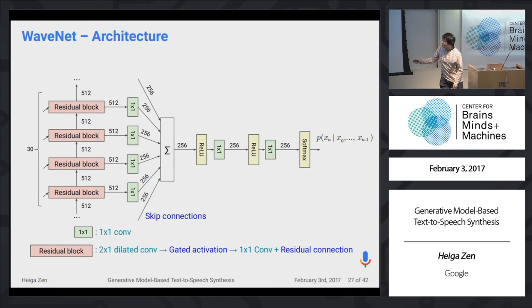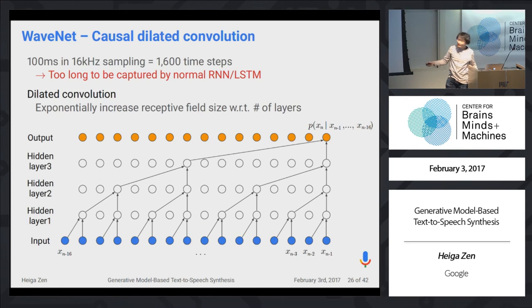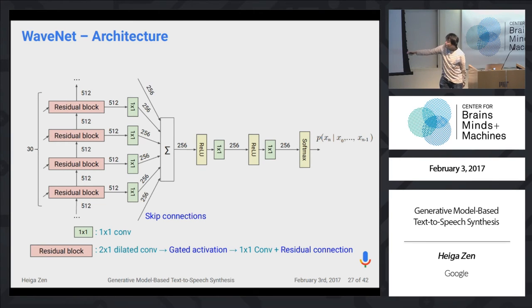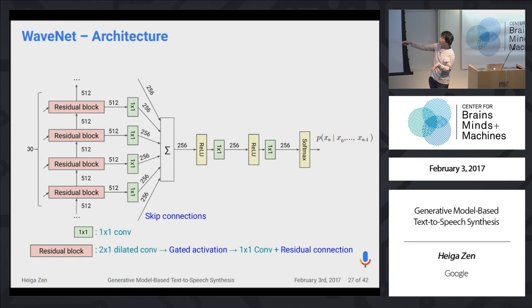This figure shows the WaveNet architecture. Each residual block contains a dilated convolution, gated activation, and convolution with a residual connection. Each residual block also has a skip connection. The skip connections are summed, followed by additional rectified linear non-linearity. Finally, there is a softmax output layer to represent the probability distribution.